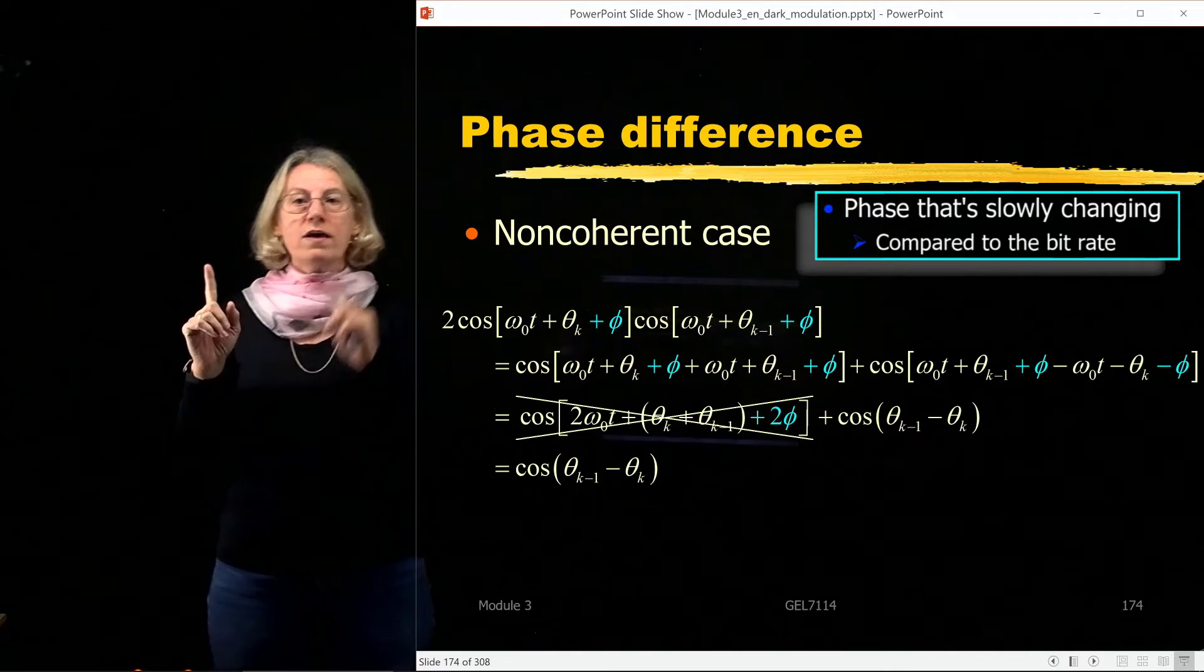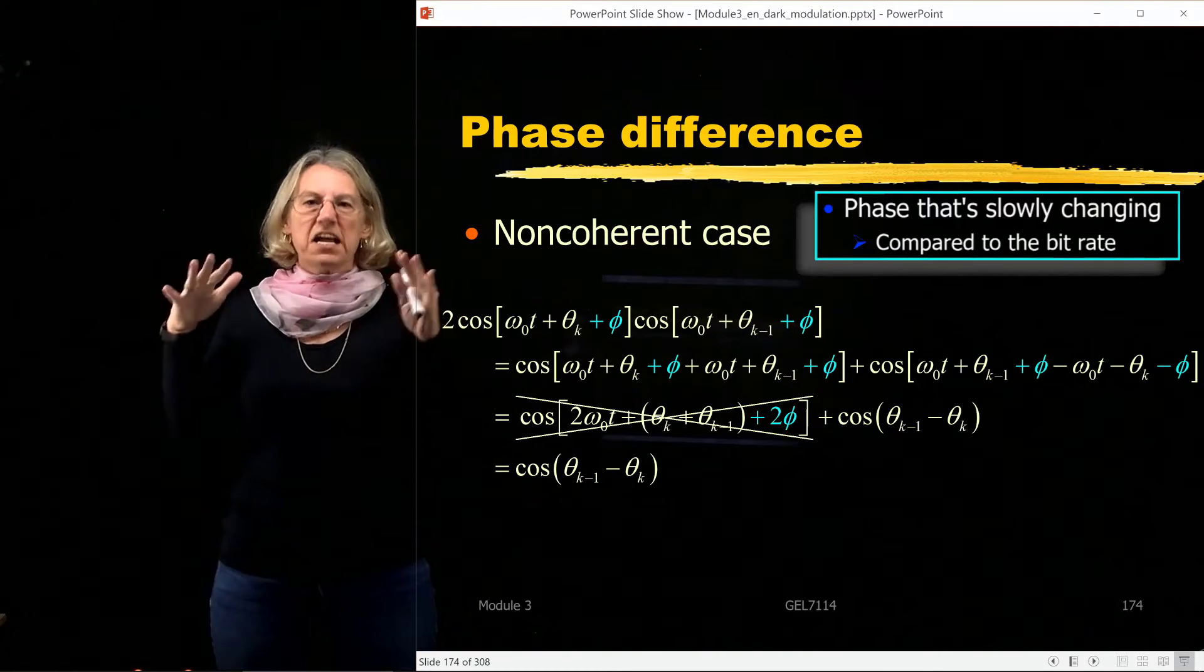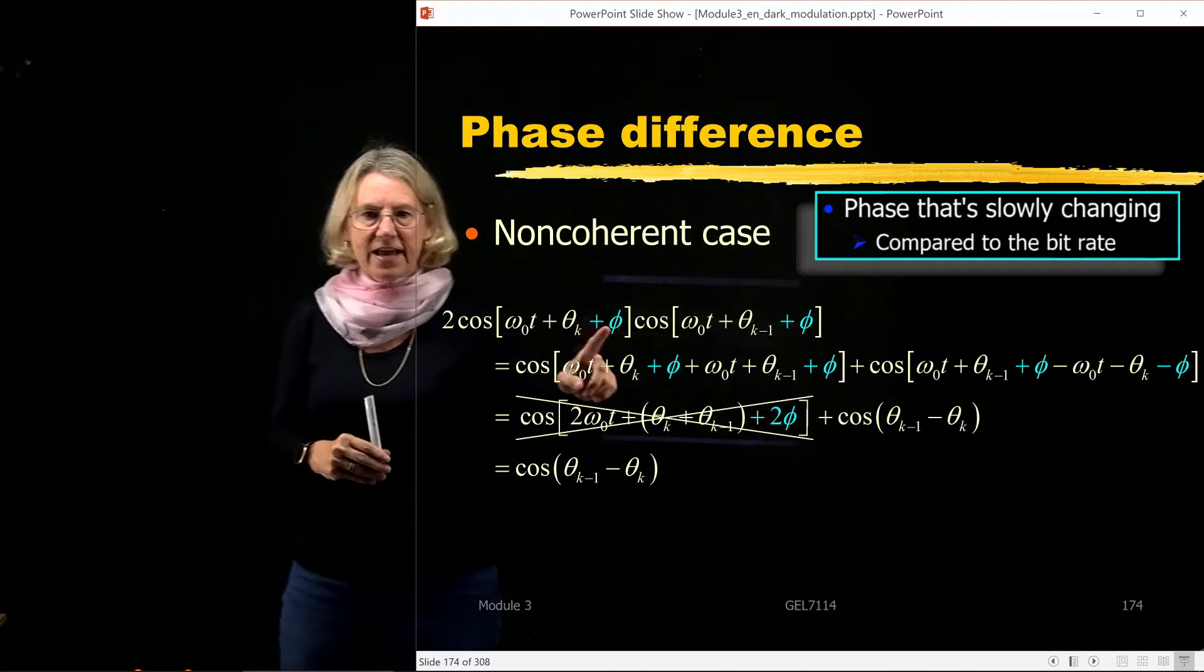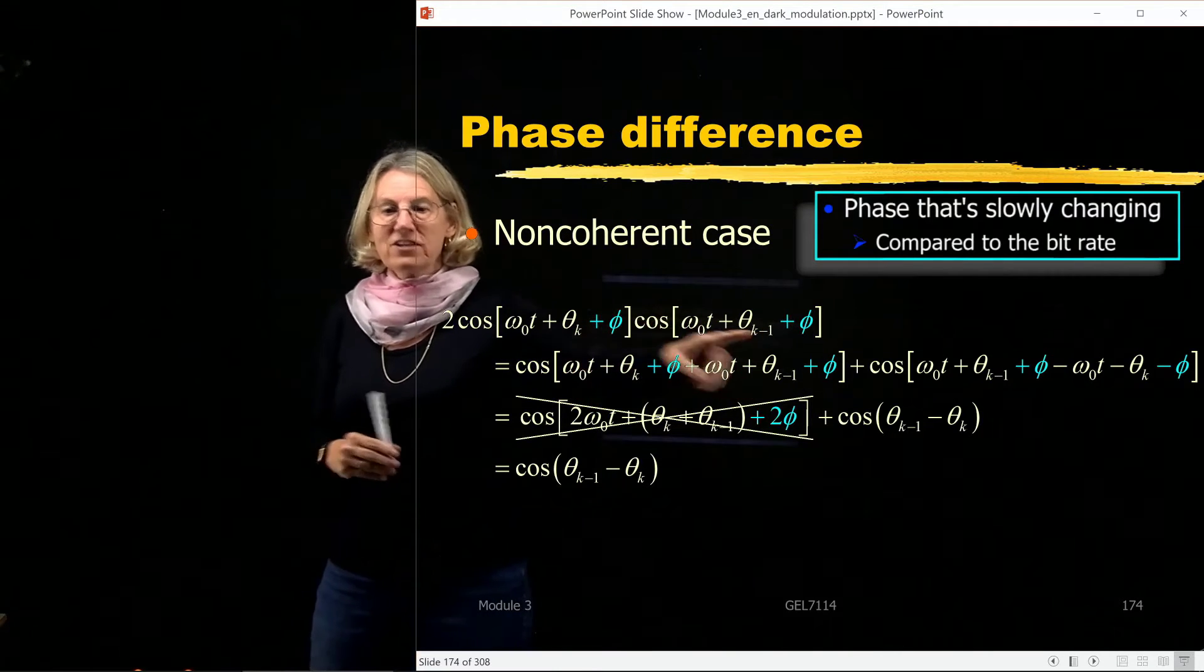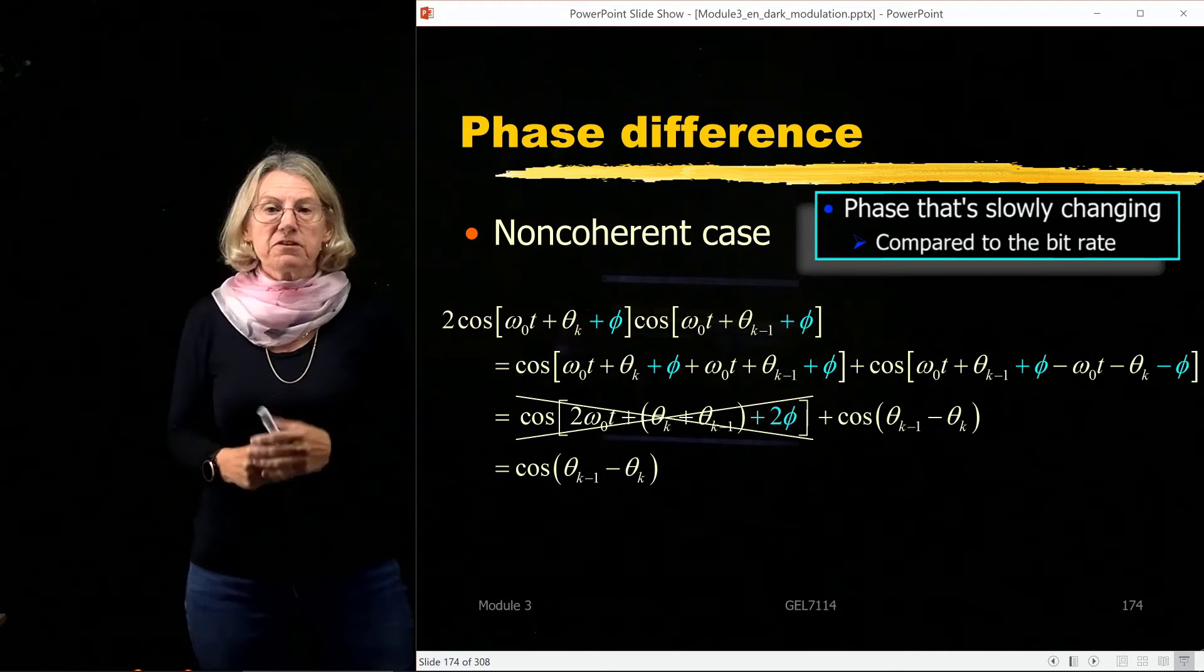But I said it was slow. And I said from one symbol interval, from one bit interval to the next, it's pretty constant. So I'm going to say that in this branch we had a phi, and in the other branch, well, that same phase difference was there.